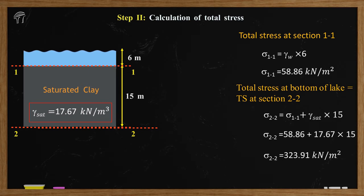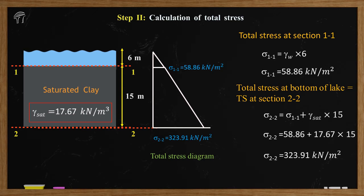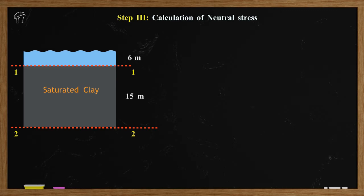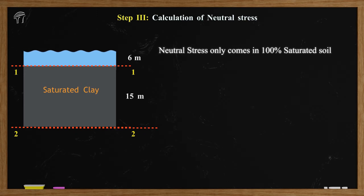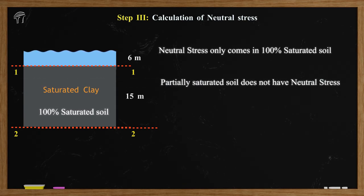These values are represented in the form of a total stress diagram as shown here. Now let's move on to calculate the neutral stress. Neutral stress at any section is the product of unit weight of water and piezometric head, denoted by symbol σ_u or sometimes just u. The most important thing to remember is that neutral stress only occurs inside a soil which is 100% saturated, which in our case it is. In partially saturated soil, neutral stress only happens due to capillary rise, which is beyond the scope of this numerical.